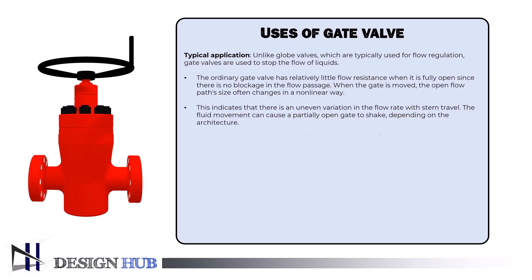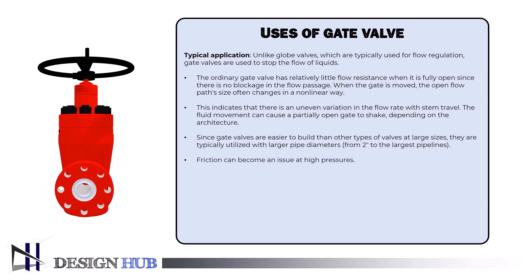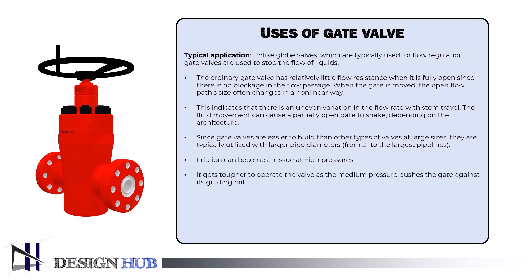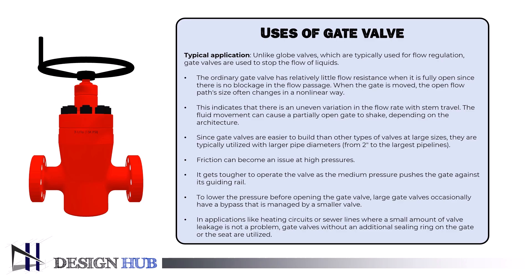Depending on the architecture, the fluid movement can cause a partially open gate to shake. Since gate valves are easier to build at large sizes, they are typically utilized with larger pipe diameters, from two inches to the largest pipelines. Friction can become an issue at high pressures. Large gate valves occasionally have a bypass managed by a smaller valve to lower pressure before opening. Gate valves without an additional sealing ring are utilized in applications like heating circuits or sewer lines where a small amount of leakage is not a problem.